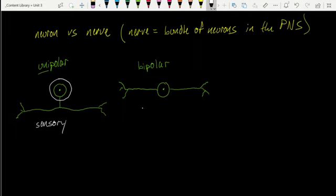And we find this in our special senses, which we'll talk about later on. But sight, sound, that's where we find these bipolar neurons.